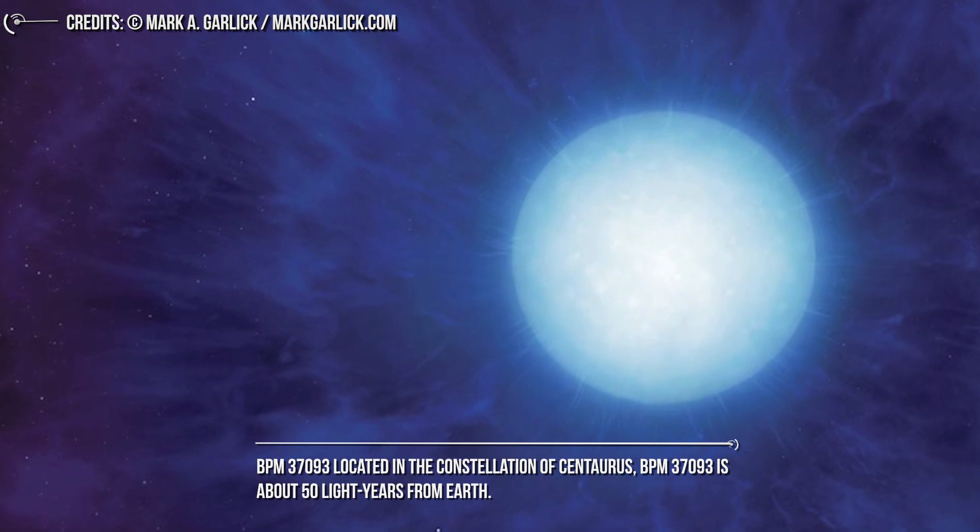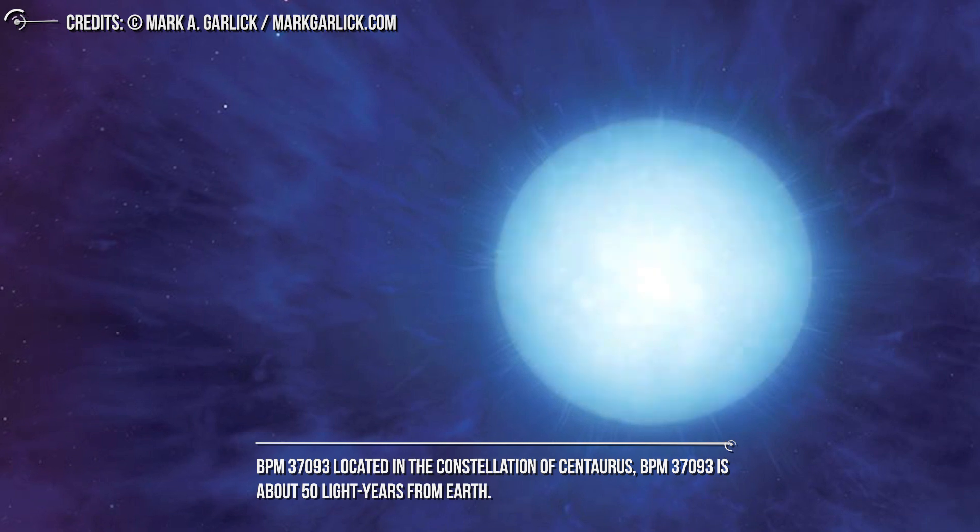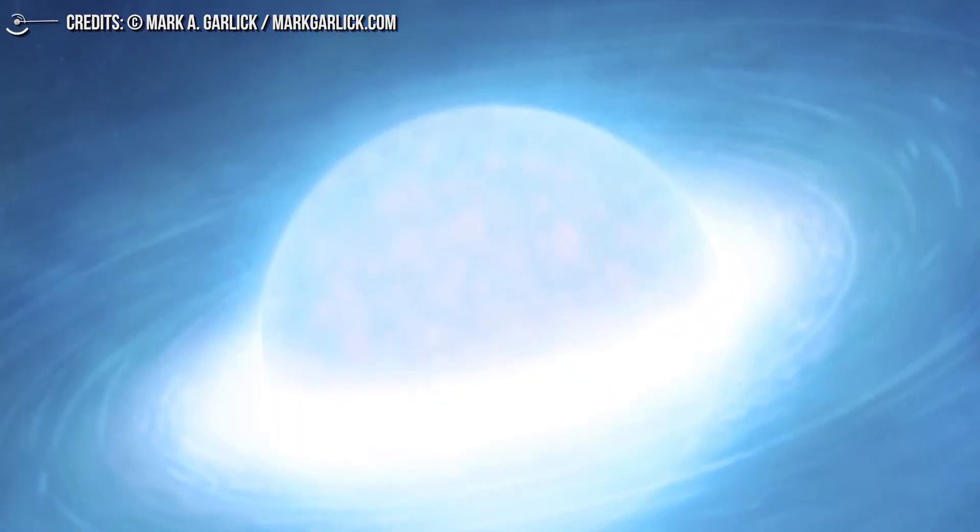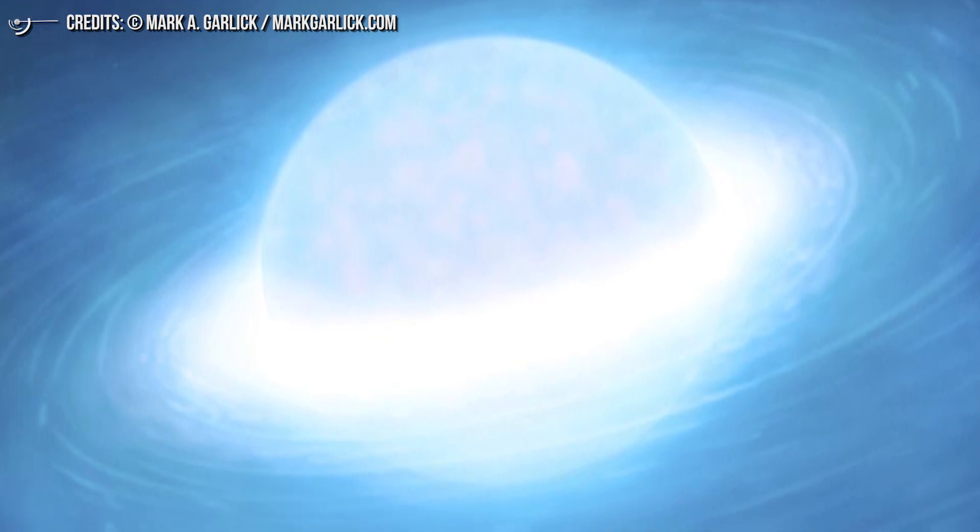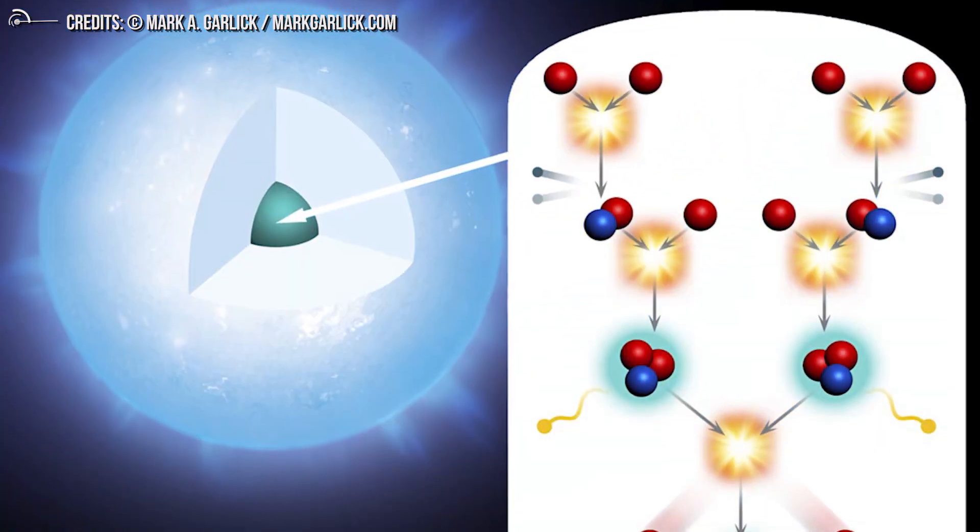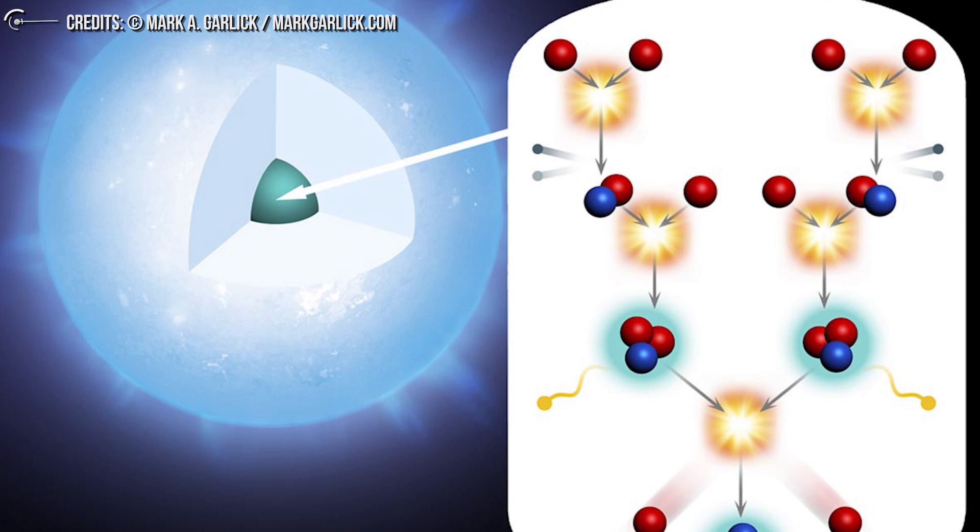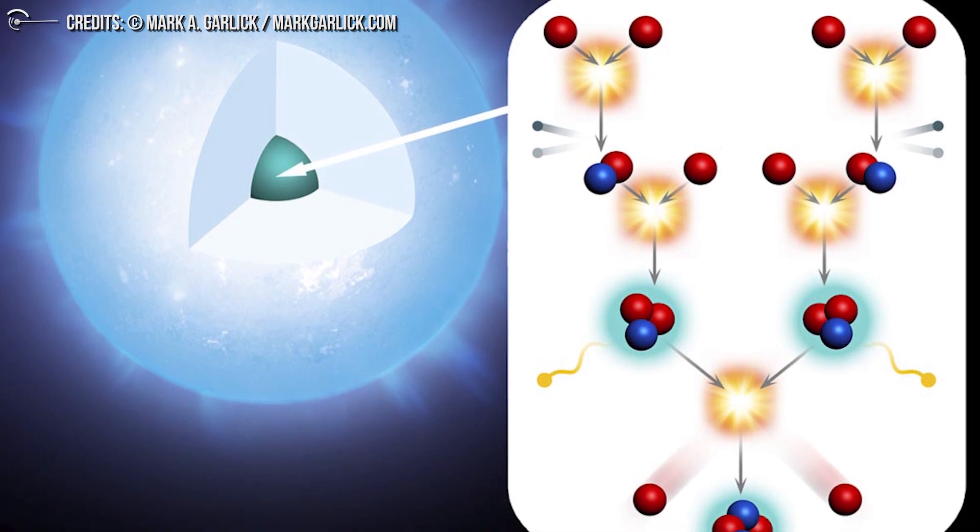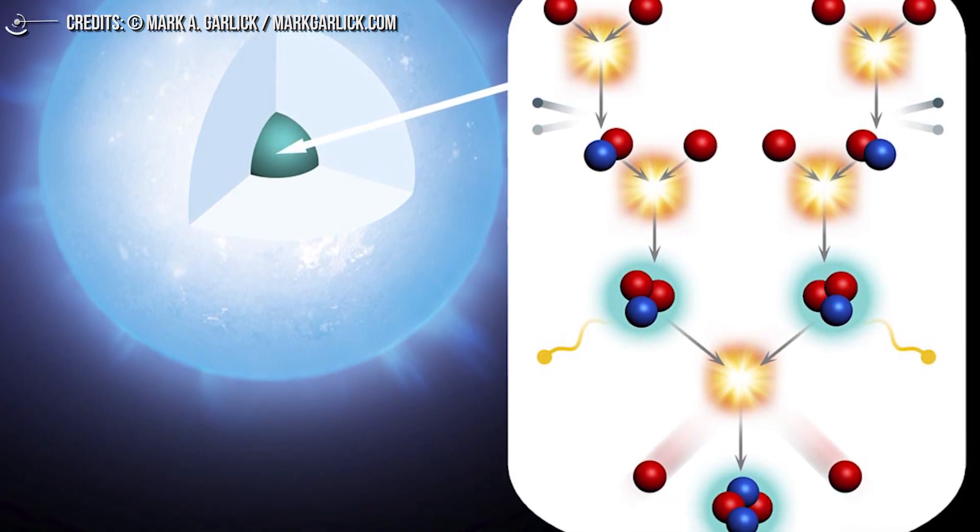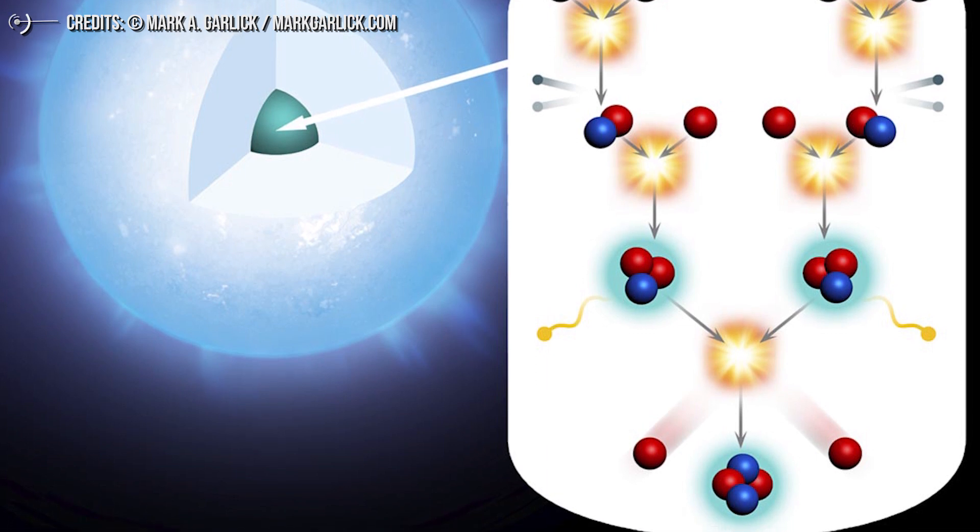This star was originally thought to be a white dwarf, but it was later found to be incredibly dense. It has a little bit more mass than our sun, but it's way denser, with all the mass compacted down to about a third of the size of the Earth, making it effectively a crystallized star.